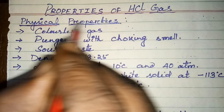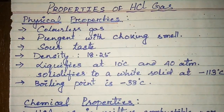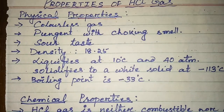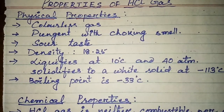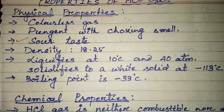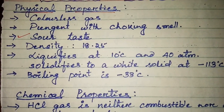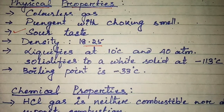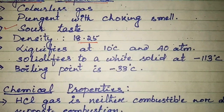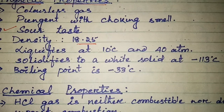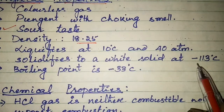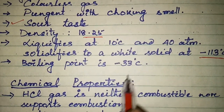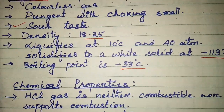First, the physical properties of HCl gas. It is generally a colorless gas. It is pungent with a choking smell. It has a sour taste, which is a most important point. The density of HCl gas is 18.25. It liquefies at 10 degrees centigrade and 40 atmospheric pressure, and solidifies to a white solid at minus 130 degrees centigrade. The boiling point of HCl gas is minus 33 degrees centigrade.